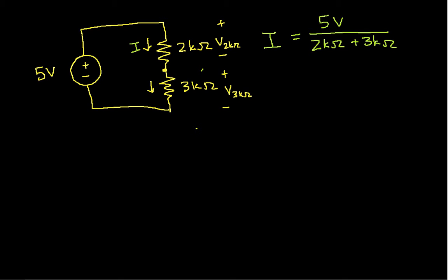Now using the results from single loop circuits, I've figured out what the current is. So the voltage, we'll do this 2k ohm resistor in orange, so V_2k ohms is the current flowing through the resistor, which is I times 2k ohms. But you'll notice that I already know what I is. I've solved for that. So I can write this as 5 volts over 2k ohms plus 3k ohms times 2k ohms.